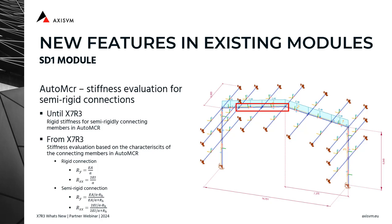X7F3 expands SD1, the module responsible for the design of steel members, with two new features. The first one is connected to the Auto MCR module. In previous iterations of AXISVM, semi-rigidly connected elements to the beam under design got a support stiffness as if they were rigidly connected elements. Now these connecting stiffnesses are evaluated more precisely.